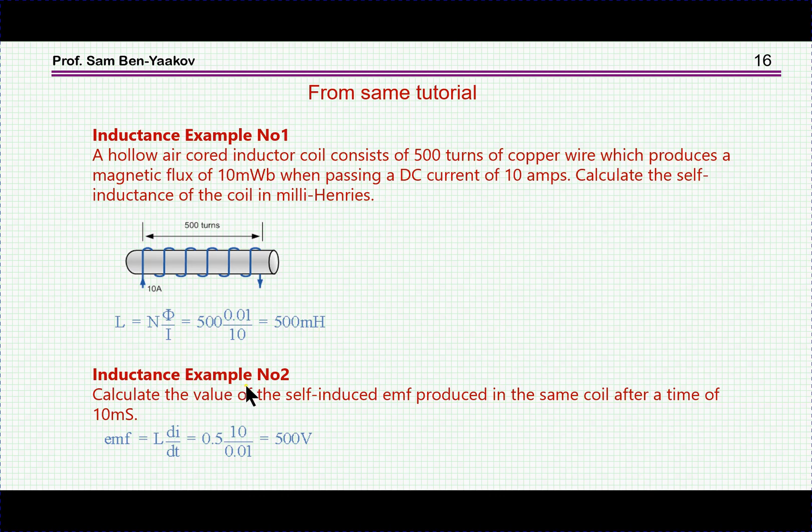Now comes example number two: Calculate the value of the self-induced EMF produced in the same coil after a time of 10 milliseconds. We have a coil, there is a DC in it of 10 amps, and there is a question here which is kind of very strange: What is the back EMF?